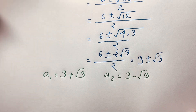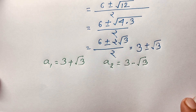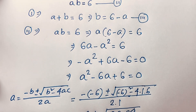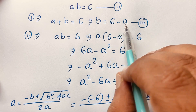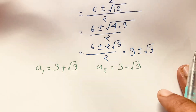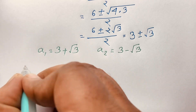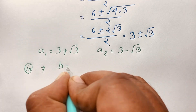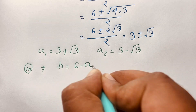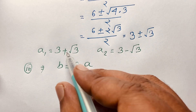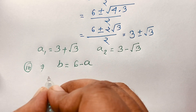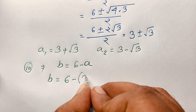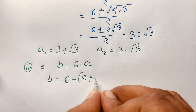Now we will find out B is equal to what. Recall our third equation: B is equal to 6 minus A. I put this value into that equation. So B is equal to 6 minus A, and substituting A₁ equals 3 plus square root of 3, we get B is equal to 6 minus (3 plus square root of 3).